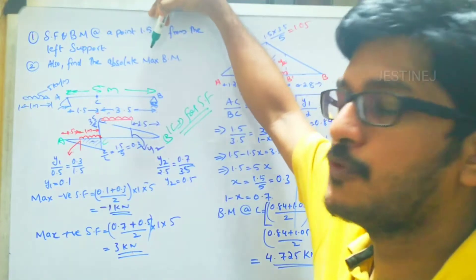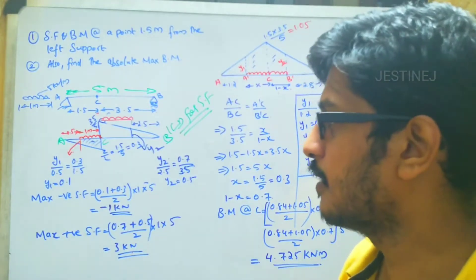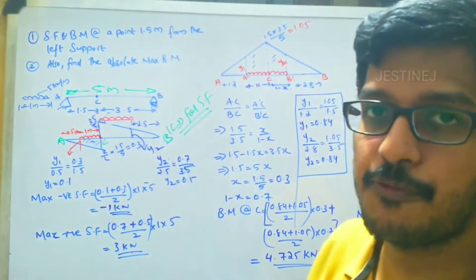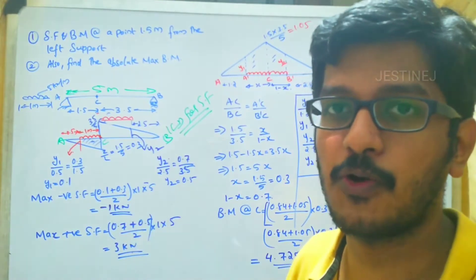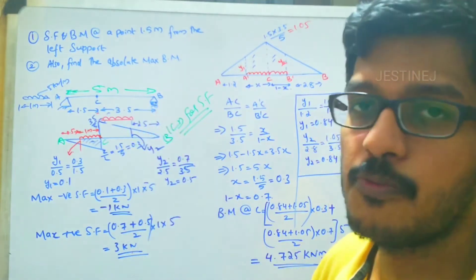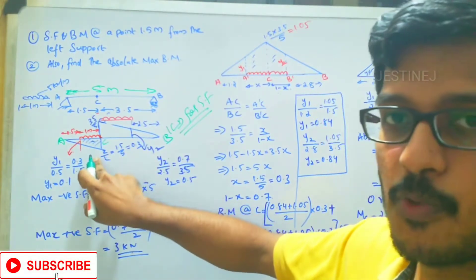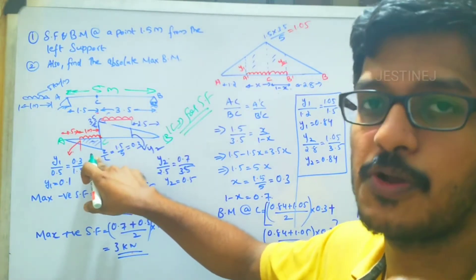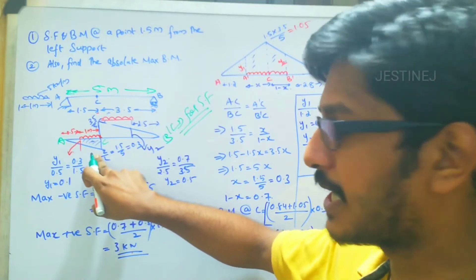Also, what will be the maximum bending moment when this UDL is placed over the beam. First, we will find the shear force at the point 1.5 meter. For that, we will consider the ILD for 1 kilo Newton passing through AB. The ILD for shear force at C will be in a shape already discussed in previous lectures. At point C, the negative shear force will be maximum.